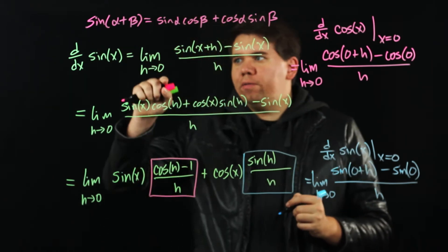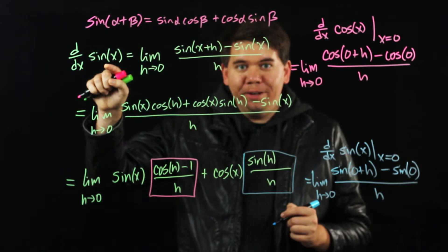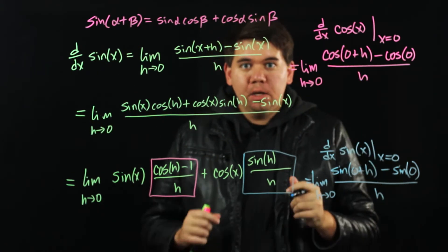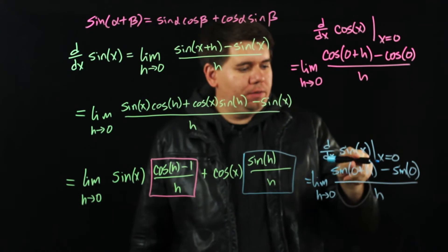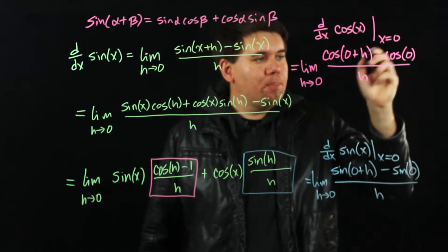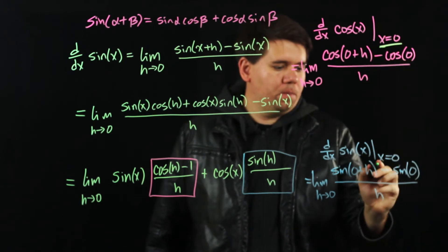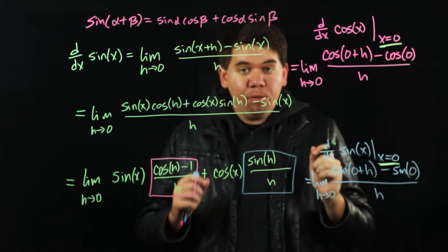It seems like in order for us to calculate the derivative of sine, we need to know both the derivative of cosine and sine. But notice we only need to know the derivative of sine and cosine at a particular point, at this point x equals 0. And we can do that.